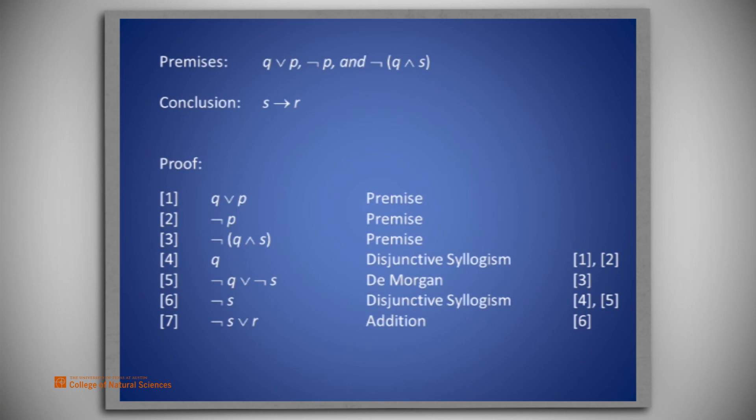However, we know from the definition of implies that if the antecedent, in this case S, of an implication is false, we may say that false antecedent implies any consequence at all. This takes two steps, however.